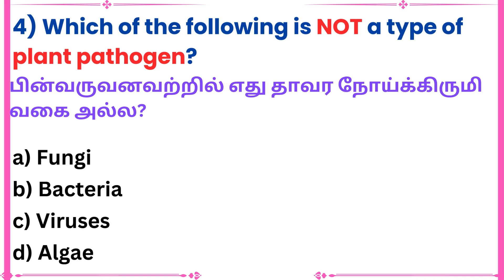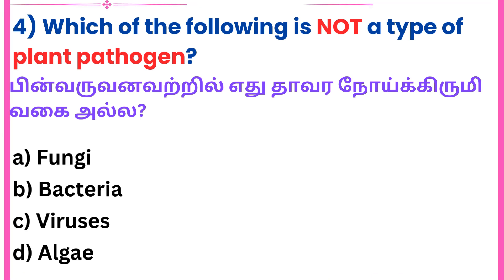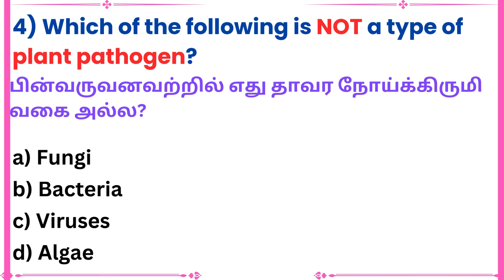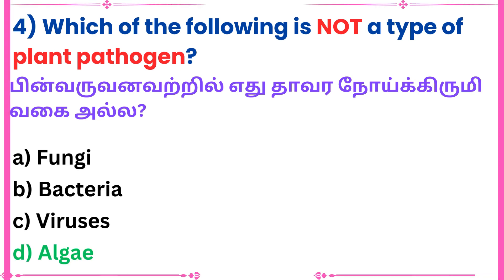Fourth question: Which of the following is not a type of plant pathogen? Answer: Algae.